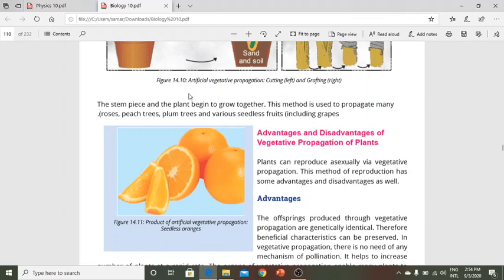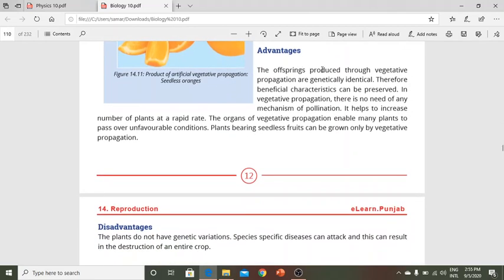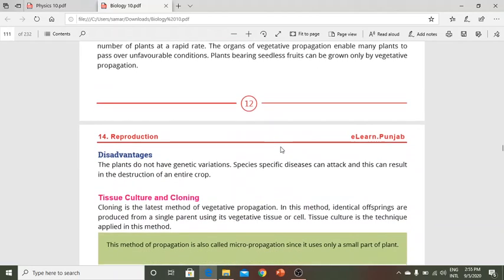Advantages of vegetative propagation: Offspring produced are genetically identical and beneficial characteristics are preserved. There is no need for any pollination mechanism. It helps increase the number of plants at a rapid rate. Organisms can pass over many unfavorable conditions. Plants bearing seedless fruits can be grown through vegetative propagation.